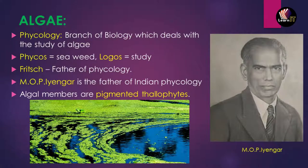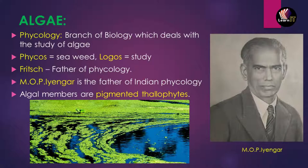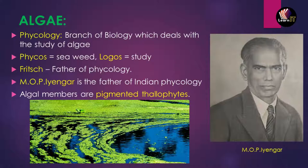One of the main classifications was Eichler's classification, in which plants are divided into two sub-kingdoms: Cryptogamae and Phanerogamae. Cryptogamae means non-flowering, seedless plants, and Phanerogamae means flowering, seed-bearing plants. Cryptogamae has been divided into three divisions: Thallophyta, Bryophyta, and Pteridophyta, while Phanerogamae is divided into Spermatophyta.